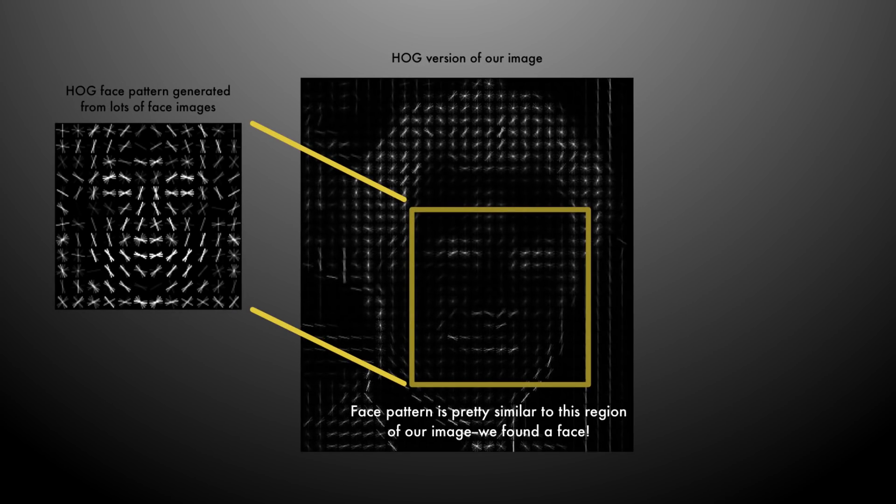Saving all these directions is too space-intensive, so we break the image into smaller squares and count how many different directions there are. Then replace each square with the direction that has the most counts. This turns the original image into a very simple representation that captures the basic structure of a face in a simple way.